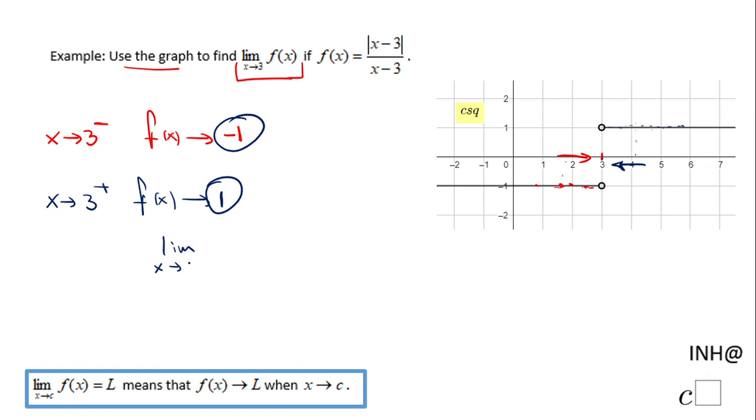So what does it mean for us? The limit as x approaches 3 of this function does not exist. We have no limit here because you notice there are two different values.